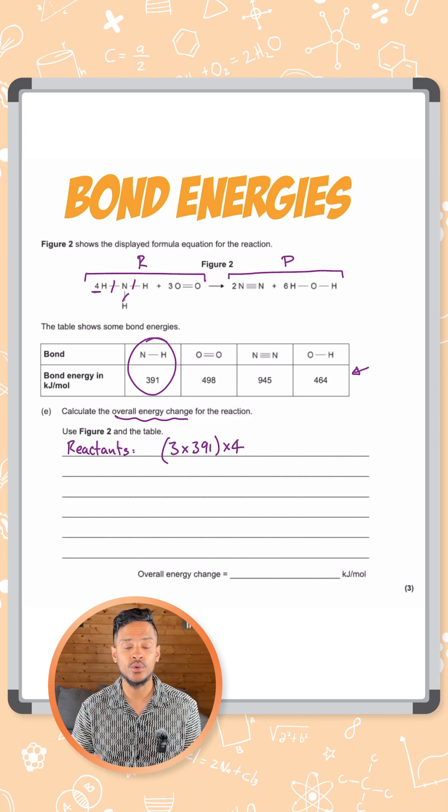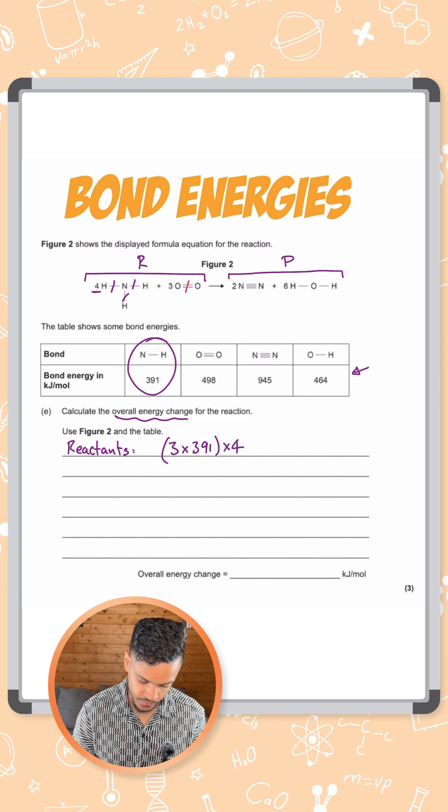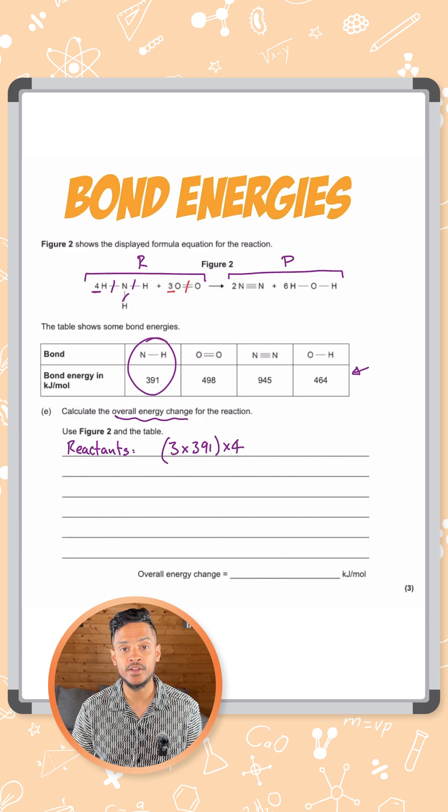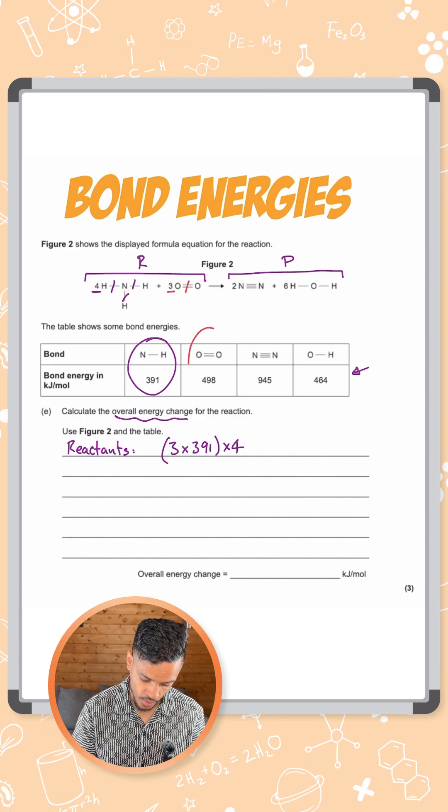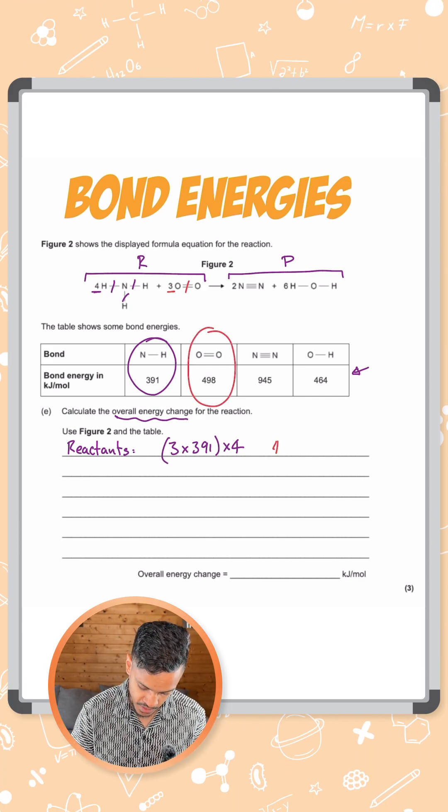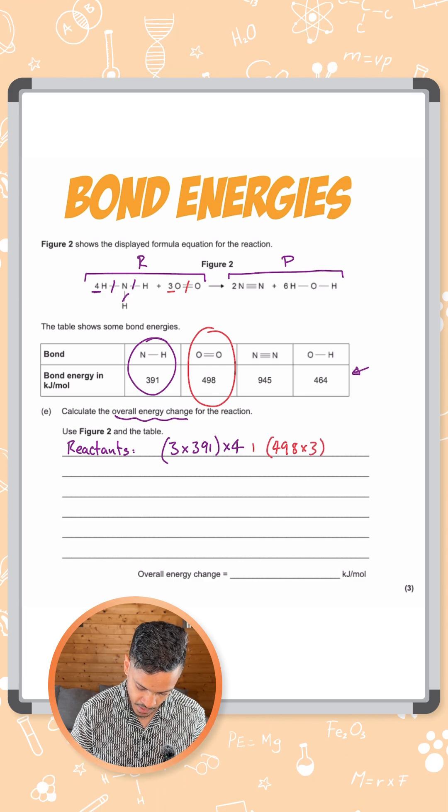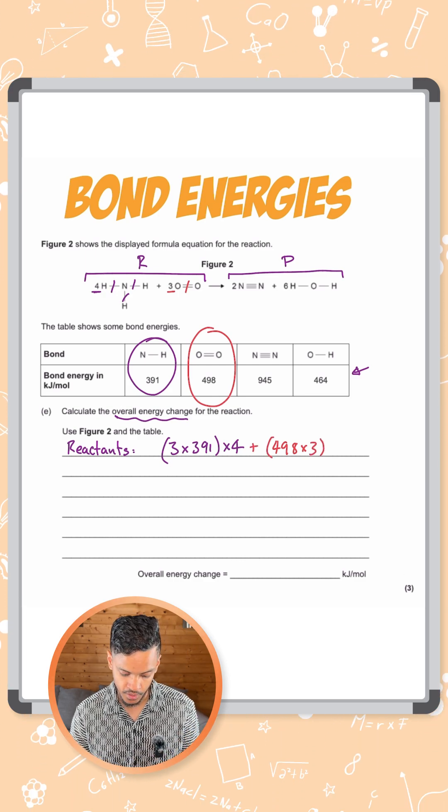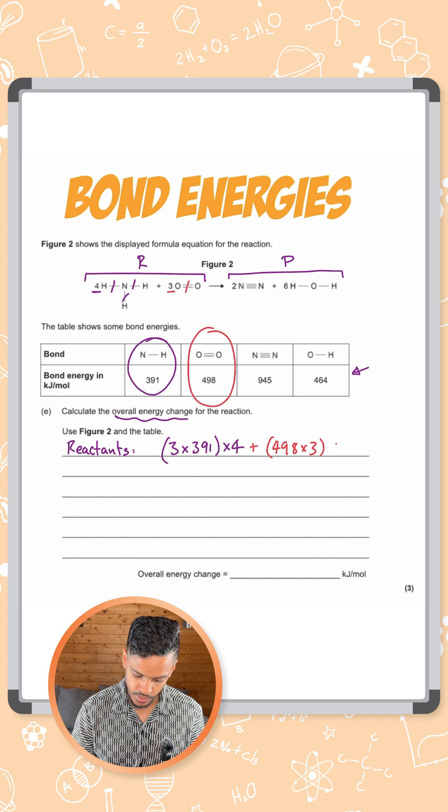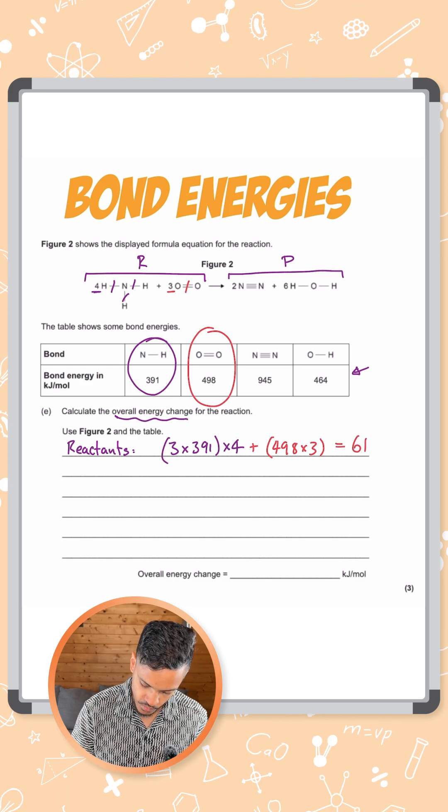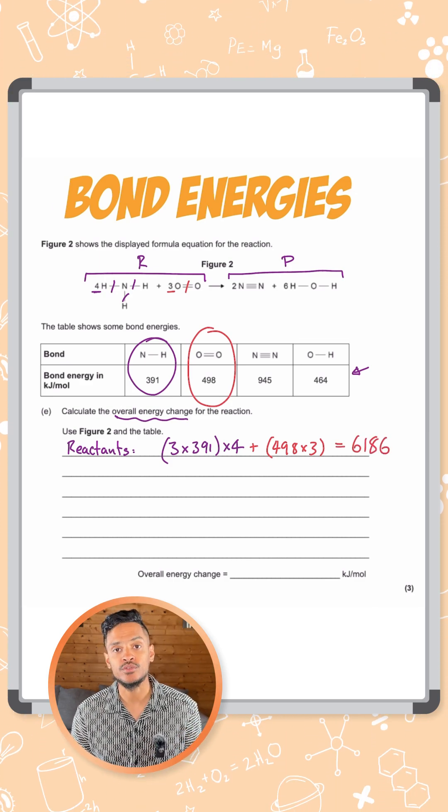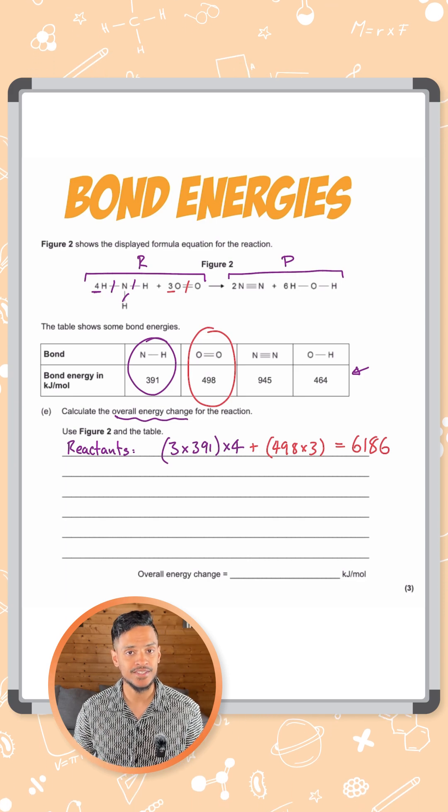Next we have our O=O double bond here. We've got one of those but we have a big three in front. So we've actually got three O=O bonds. So that's going to be 498 times by three and we're going to add that on to what we got for the NHs and putting that into a calculator gives you an answer of 6186 kilojoules per mole. That's the reactants done.